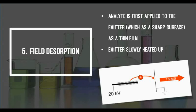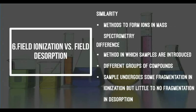Field ionization and field desorption, although similar in the sense that they are both methods to form ions, have various differences. The methods in which samples are introduced into the ion source differs for field ionization and desorption. They also ionize different compounds as field ionization deals with compounds that are more thermally stable as compared to field desorption where compounds are less thermally stable. In field ionization, there exists some fragmentation due to the heat for sample volatilization. This is where the sample is converted to gaseous state, unlike in field desorption where there is little to no fragmentation.